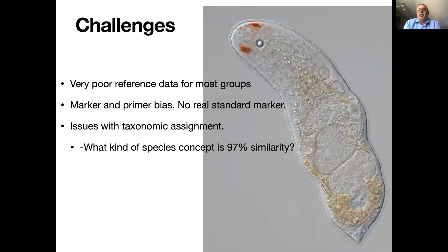It's very hard to design universally working primers for CO1 especially because it's a fairly variable gene. And then of course we have the issues with the taxonomic assignment. What kind of species concept is 97% similarity? It's not really an evolutionary concept — it's just a more or less arbitrary cutoff value, which doesn't necessarily correspond to species by any more evolutionary grounded concept.